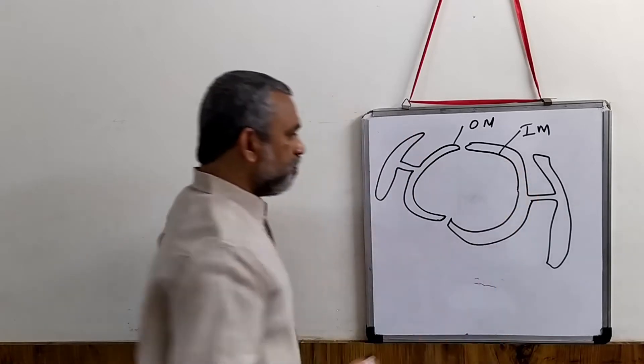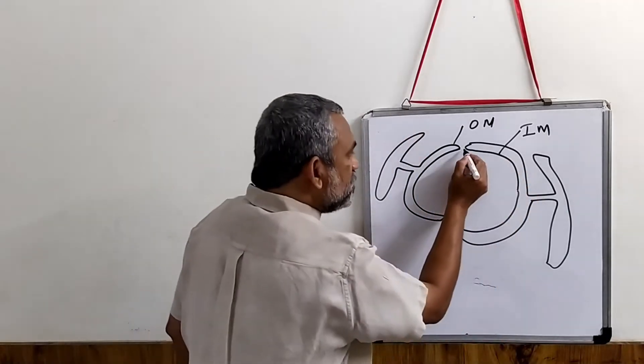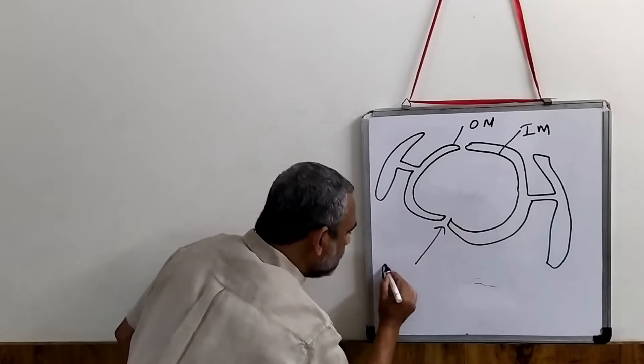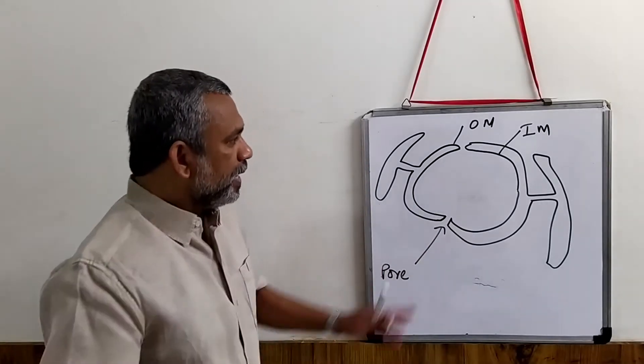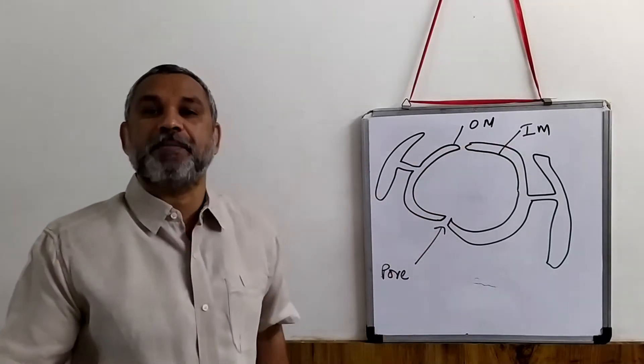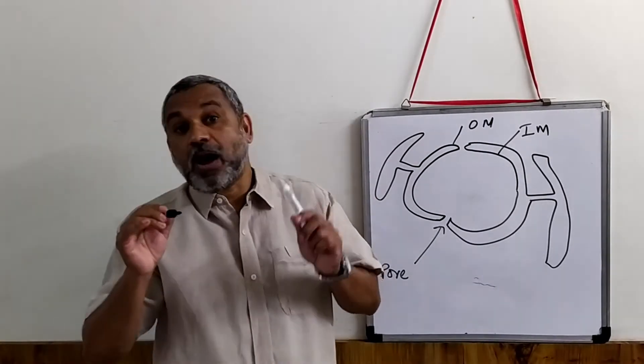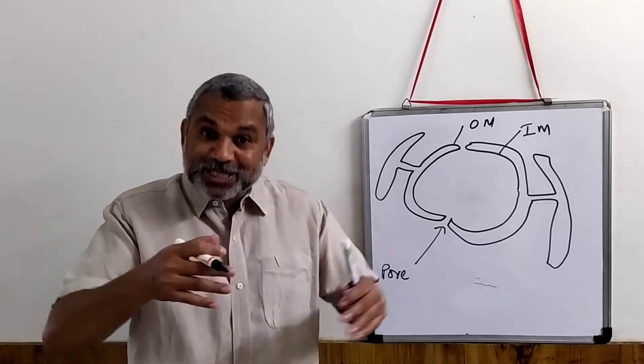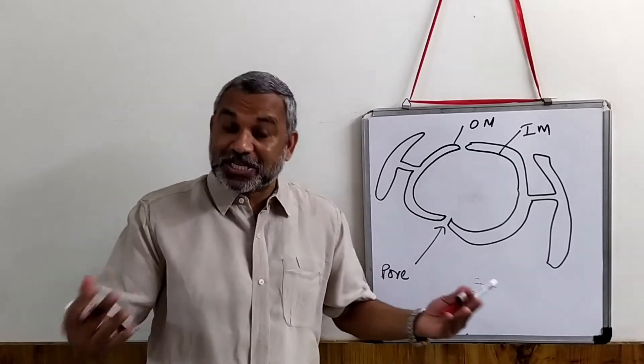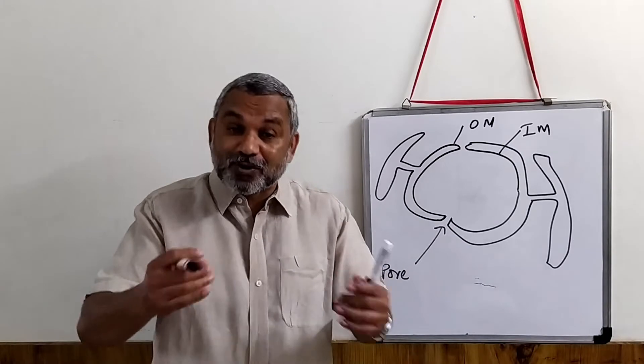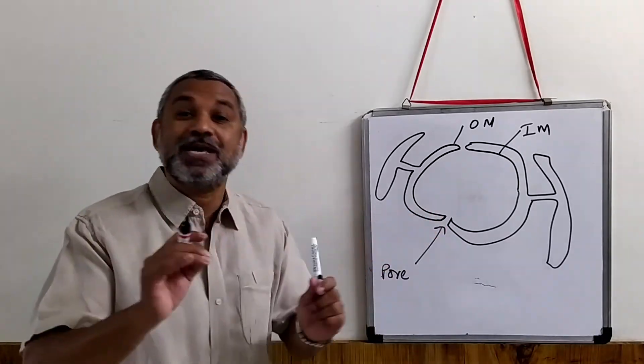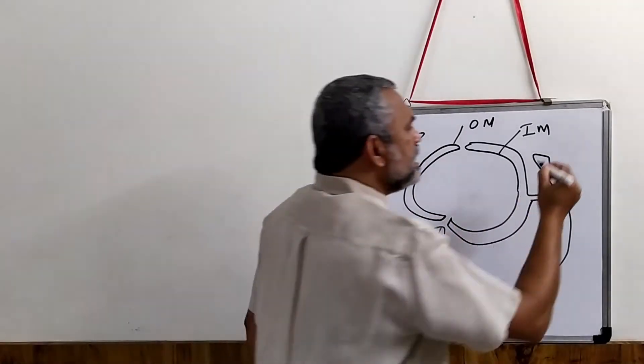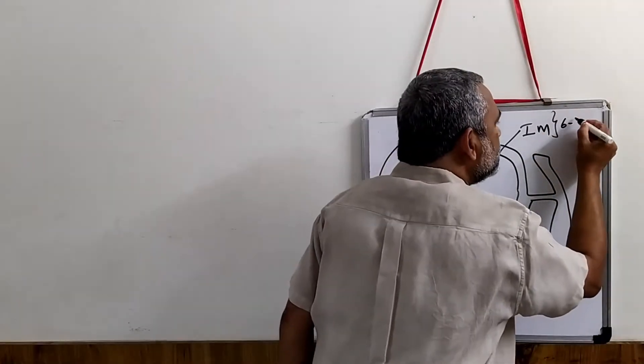This is the inner membrane, this is the outer membrane, and this is continuous with the endoplasmic reticulum. And this is our nucleus. Now this is what you call the nucleopore. The inner membrane and outer membrane are phospholipid bilayers. In a cell, you will find only three such organelles which have phospholipid bilayers, and nucleus is one such organelle.